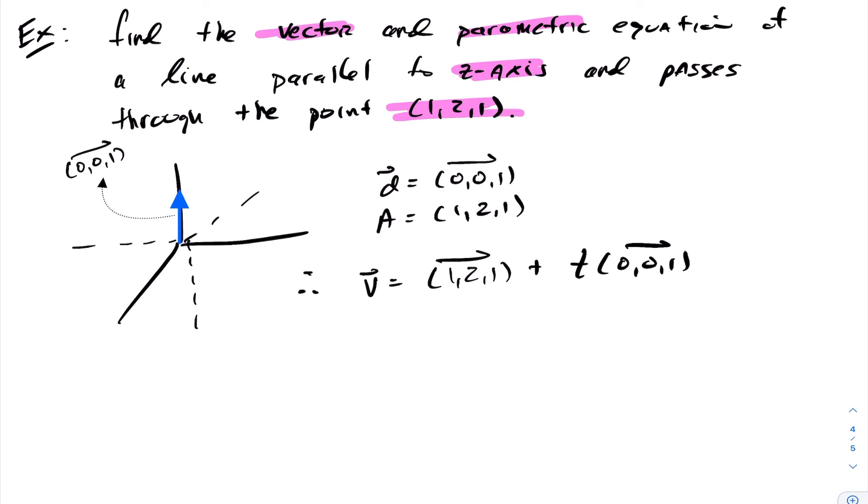Equivalently we can write our parametric form as x equals 1 plus 0t, so x equals 1, y equals 2 also plus 0t so the y value is 2, and lastly z equals 1 plus t where t is any real number.